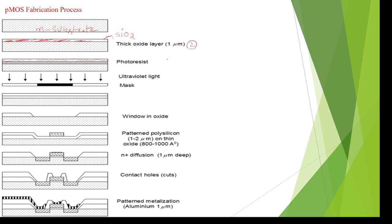In the fourth step, we pass UV light — UV rays — to harden the surface. Where diffusion is not required, UV rays are passed. Where diffusion is required, we stop the light using a mask.